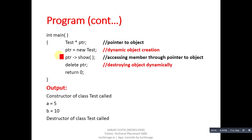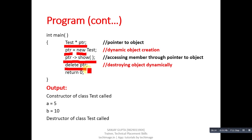In the main method, only a pointer is declared and the object is created with 'new ClassName'. The beginning address of the allocated memory is stored inside ptr. We then call ptr->show(). Since there is no static object, you can only access the class methods through this pointer. 'delete ptr' destroys the allocated memory. The output shows: 'constructor of class test called', then 'a=5 and b=10' from ptr->show(), then 'destructor of class test called' because of delete ptr.